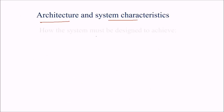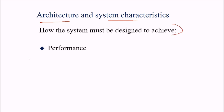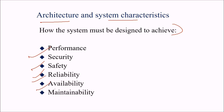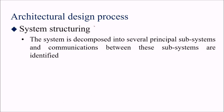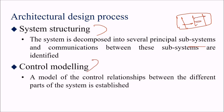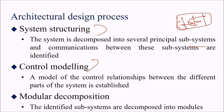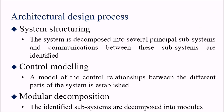Architecture and system characteristics: the system must be designed to achieve performance, security, safety, reliability, availability, maintainability, and quality. The architectural design process starts with system structuring — decomposing the system into principal subsystems and identifying communication between them. Then control modeling establishes the model of control relationships between parts. Then modular decomposition — the identified subsystems are again decomposed into more modules.